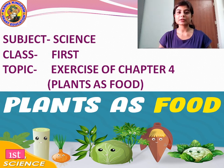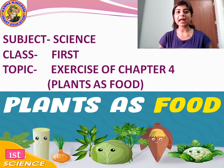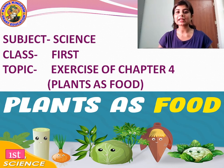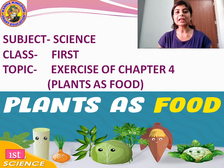The name of the chapter is Plants as Food. Remember we studied this chapter? It was about the different parts of the plant that give us food. Today we will do the exercises — question and answers, fill in the blanks, match the following — everything in your book. But before that, we will revise about the chapter, then move towards the question and answers.